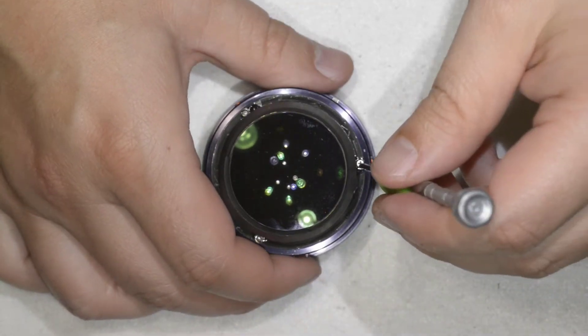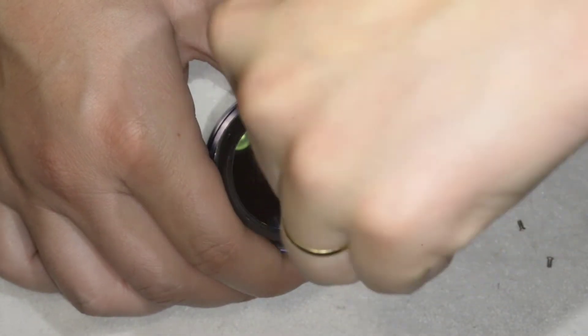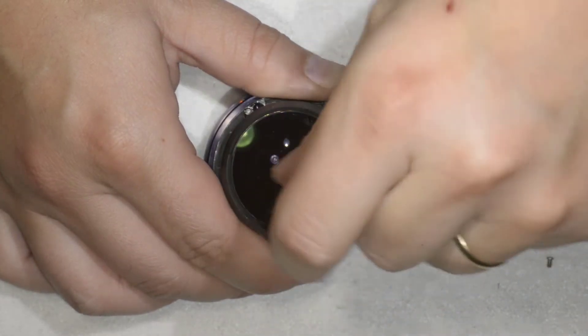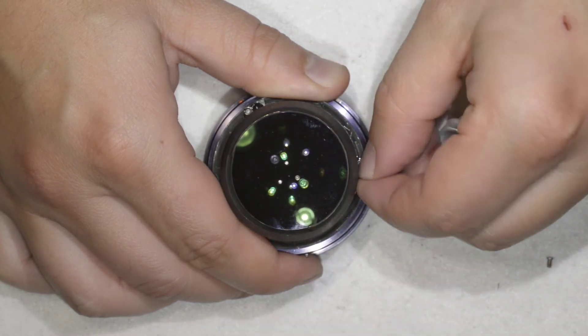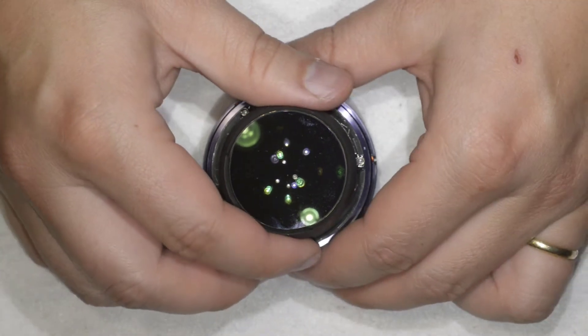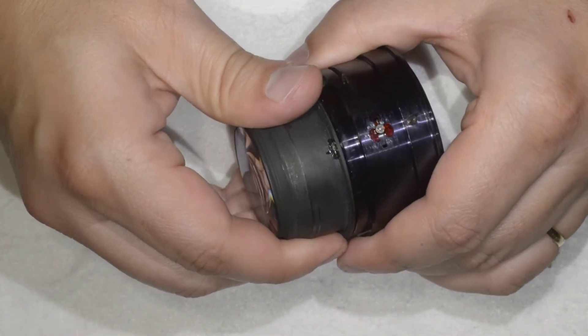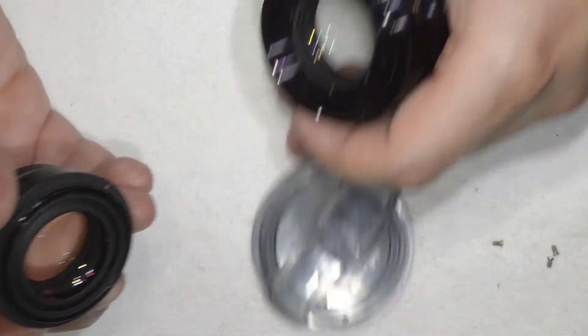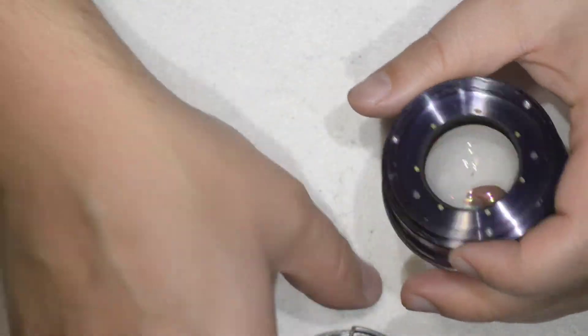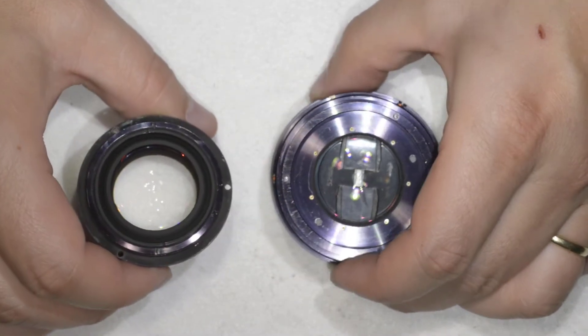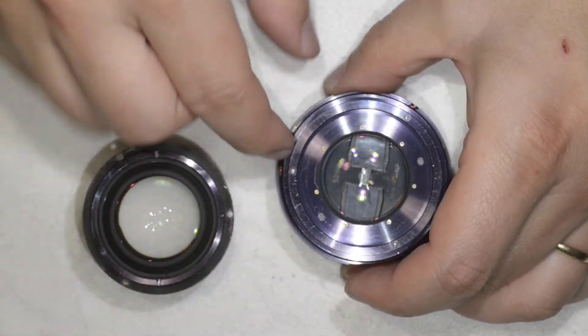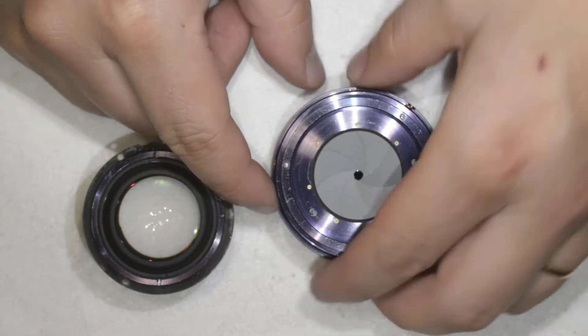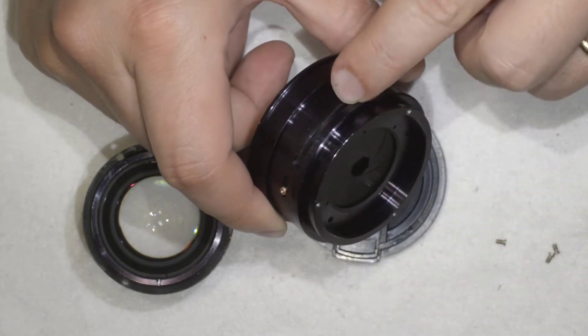There you go. I have removed only three screws and then this part here is able to come out. I have separated the lens in two sections. And as I told you before, all the dirt is coming out from these two openings here on the sides to manipulate the aperture levers.